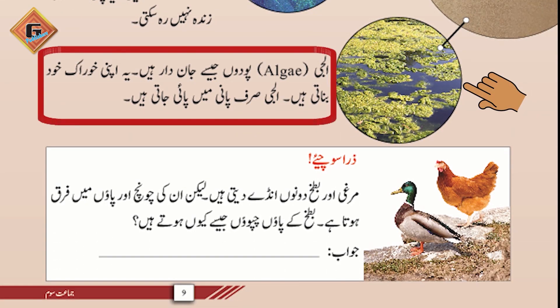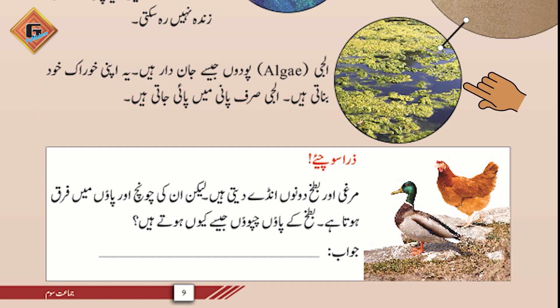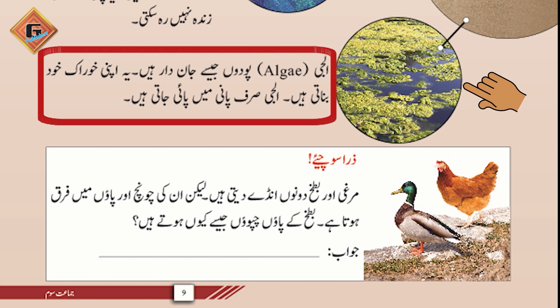تیسرا ہے algae۔ Algae پودوں کی طرح کا ایک جاندار ہے جو صرف پانی میں ہی پایا جاتا ہے۔ اگر پانی کسی جگہ پہ ختم ہو جائے تو algae بھی وہاں زندہ نہیں رہ سکتے۔ کبھی نہ کبھی آپ نے کسی پونٹس کے اوپر ایک green layer دیکھی ہوگی — وہ basically algae ہوتی ہے۔ یہ پودوں کی طرح اپنی خوراک خود بنا سکتے ہیں اور صرف پانی والی جگہ پر ہی زندہ رہتے ہیں۔